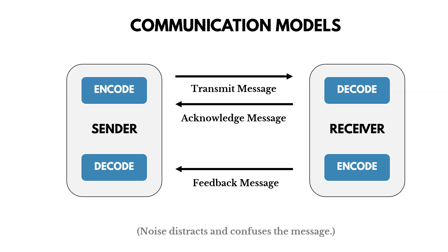In that case, the receiver is encoding a feedback message and the sender decodes it. This model shows how communication is passed back and forth between sender and receiver. There are also noise symbols shown, because sometimes when we communicate something, it doesn't get interpreted the way we intended — there's noise that prevents that.